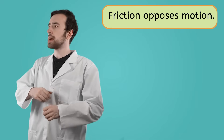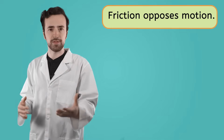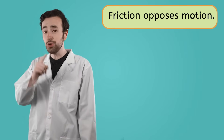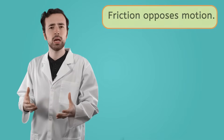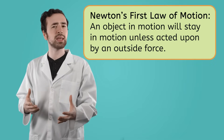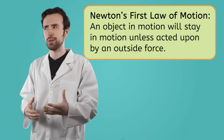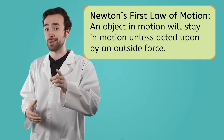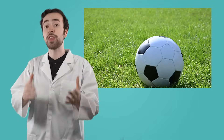Think about it like this: imagine a ball rolling along a flat, grassy field. No matter how fast that ball is going, you know that it will eventually slow down and stop. But Newton's first law states that any object in motion will remain in motion unless acted upon by an outside force. In this case, that force is the force of friction between the ball and the ground — that's what's slowing the ball down and will eventually cause it to stop.